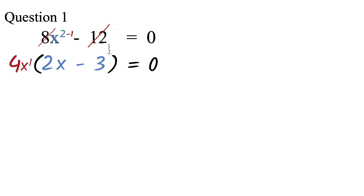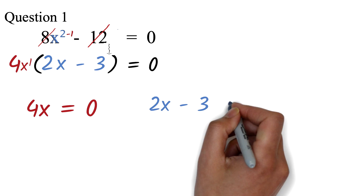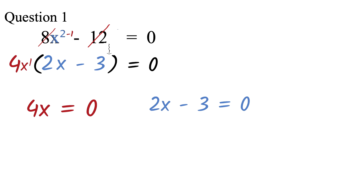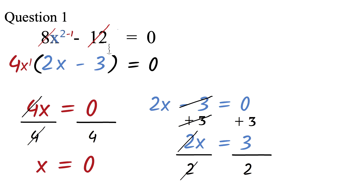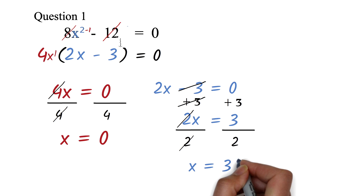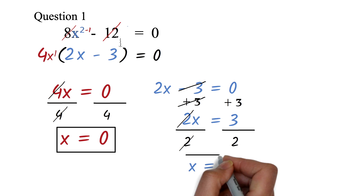Now for the solving part. The idea is that if values are multiplying and the answer is 0, then at least one of them must be 0. For this equation we have 4x multiplying 2x minus 3. So either 4x equals 0 or 2x minus 3 equals 0. Dividing both sides by 4 gives x equals 0. For 2x minus 3 equals 0, we add 3 to both sides to get 2x equals 3, then divide by 2 to get x equals 3 over 2. Our answers are x equals 0 or x equals 3 over 2.